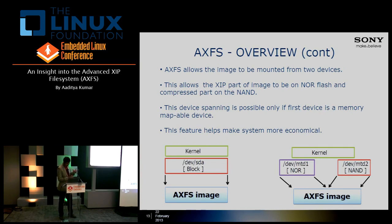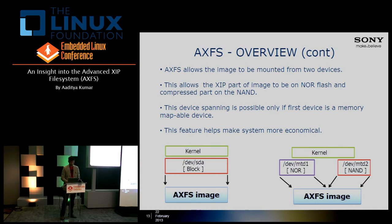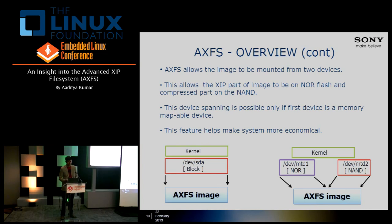The main advantage of AXFS is that the AXFS image can be split across multiple devices. This allows the XIP part of the image to be put on NOR flash and the non-XIP compressed part on NAND flash. If we can split the image into two devices, then we only need as much NOR as the number of XIP pages we want in the system. The compressed pages can go into NAND, which is of course much cheaper than NOR.